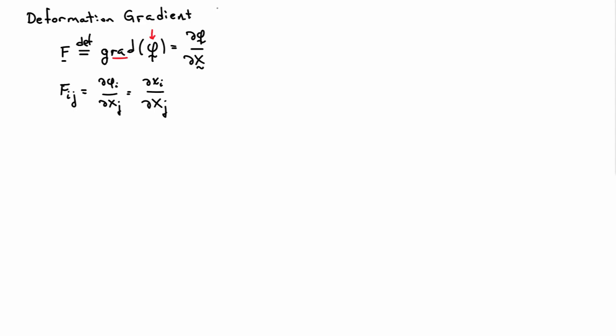If we expand that out additionally, F is a second order tensor, so it has two indices. We'll say Fij and it's equal to the derivative of phi i with respect to Xj. Sometimes people, instead of writing phi, they'll write little xi derivative with respect to big Xj.